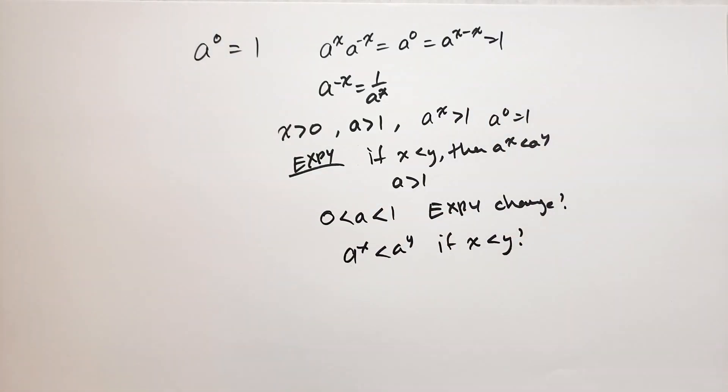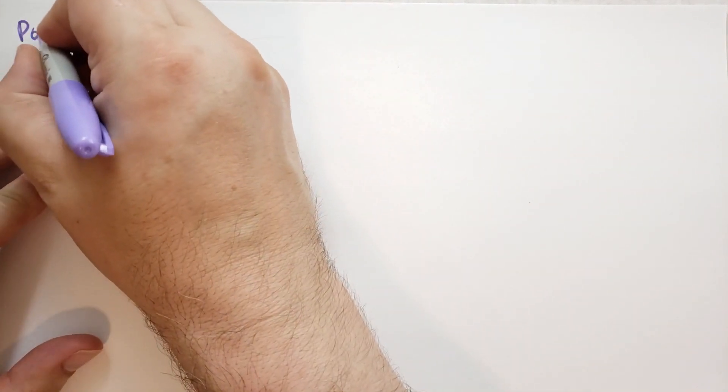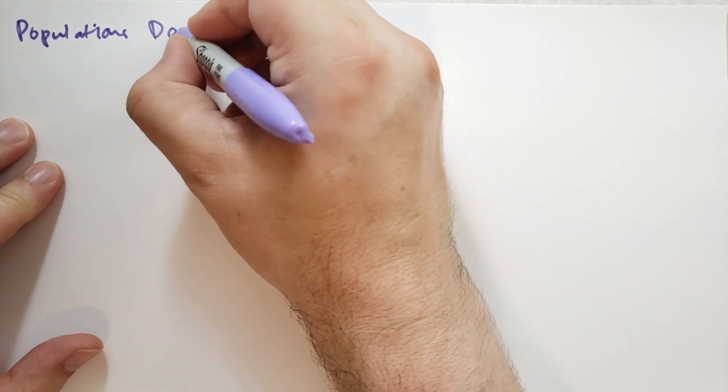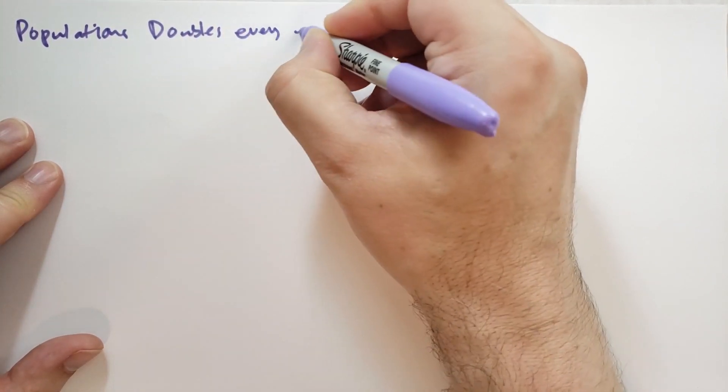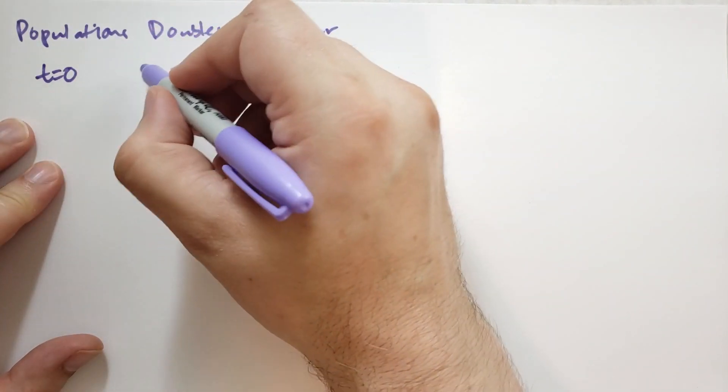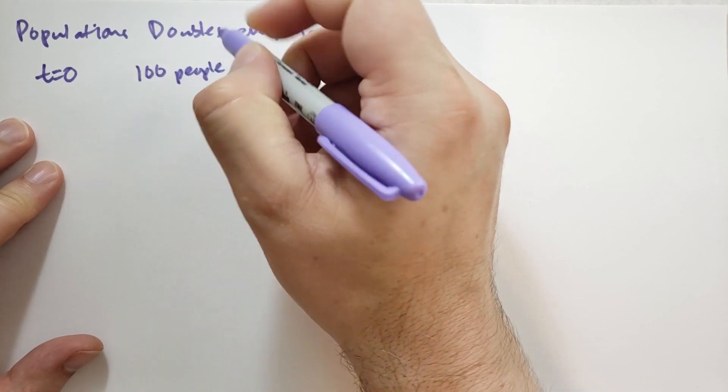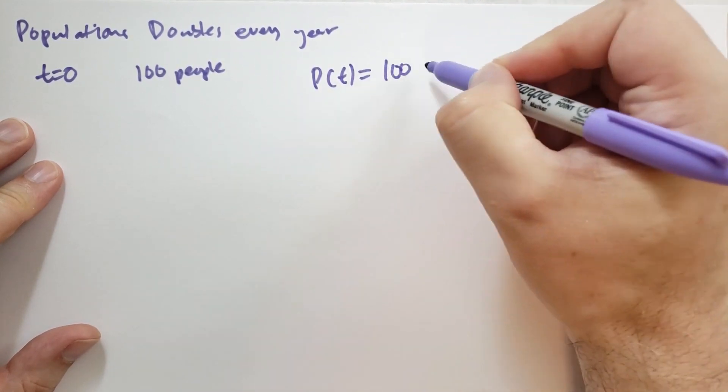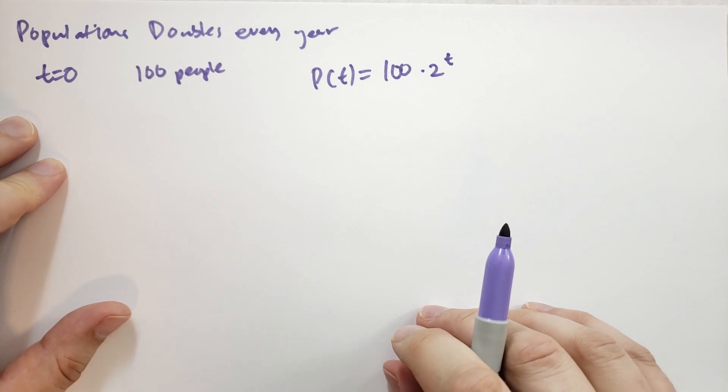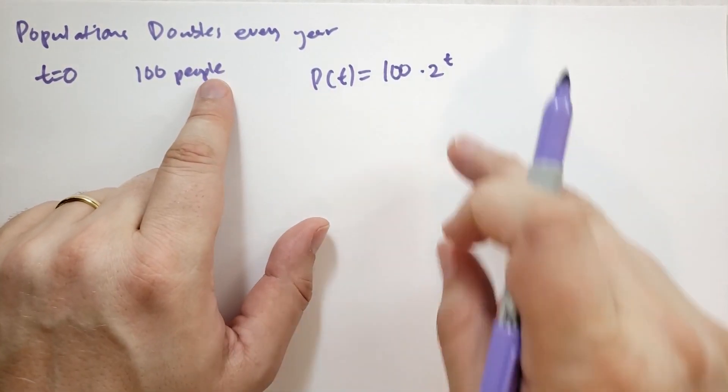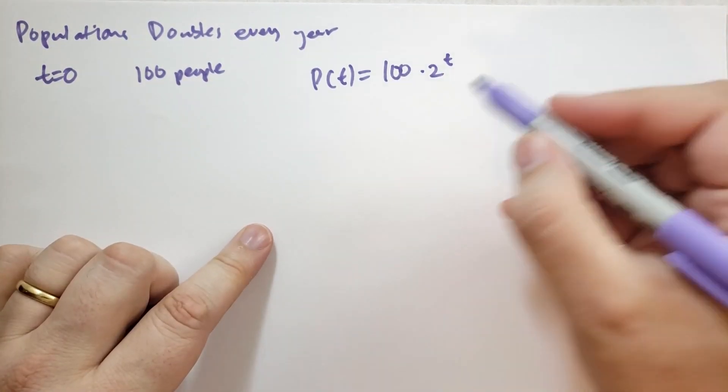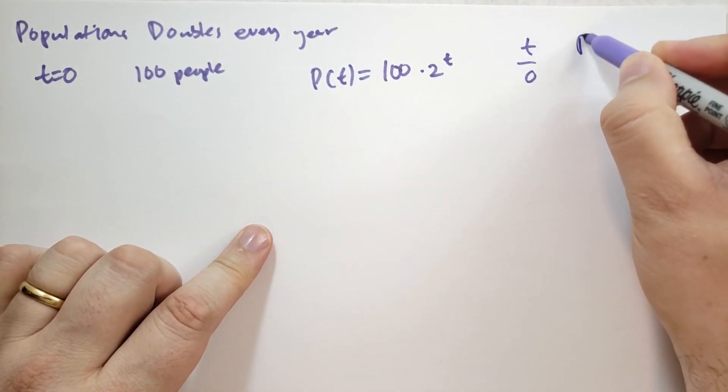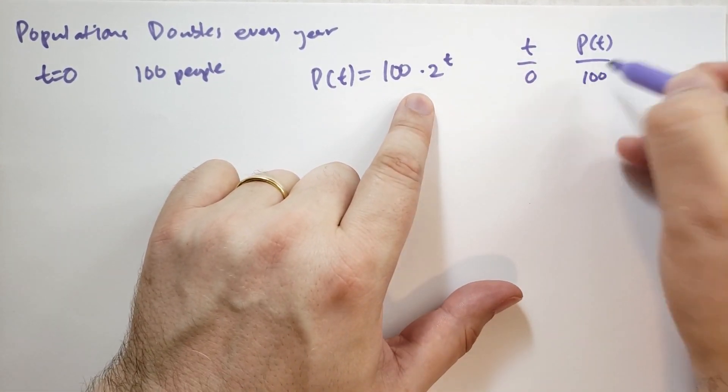Let's consider an example. The population of a city doubles every year. And at time t equals 0, it is equal to 100 persons. We can express the population in the form P(t) is equal to 100 times 2^t. And because it's doubling every year, we know that when this is an integer, this will work. So at t equals 0, the population is 2^0 which is 1, so it's just going to be 100.